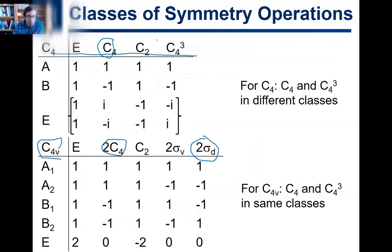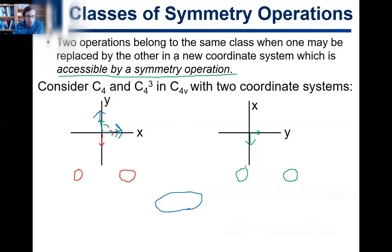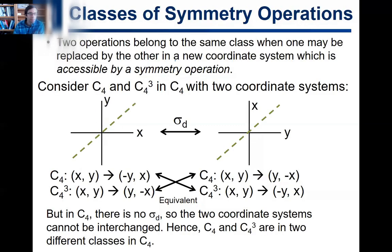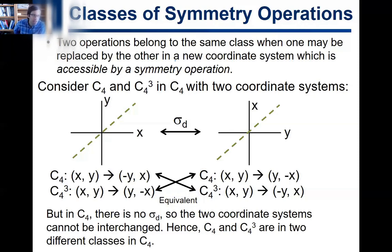That's why in the C4 character table, C4 and C4³ are in different classes. Again, this is pretty in-depth mathematical analysis — I only expect you to do this on the homework problem. For the exam, just use your intuition; I'm not going to give you a tricky case like C4. It'll be more like C4v, where the two rotations are in the same class as intuition would expect.